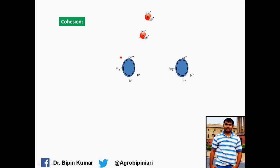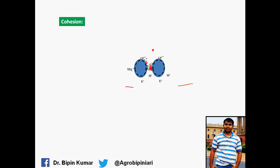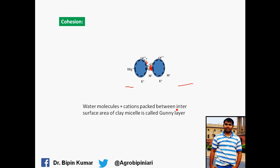Another property is cohesion. When two colloids of similar nature bind together, water molecules are held in between them. This cohesion property occurs because of the binding of water molecules between them. When water molecules plus cations are packed between the inter-surface area of the colloids, this is called ganelia. When cations as well as water are packed between the two layers of the colloids, that layer forms and is called ganelia.